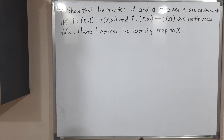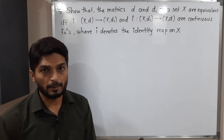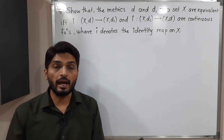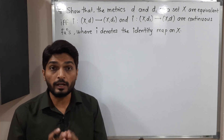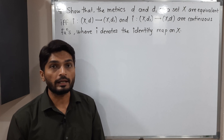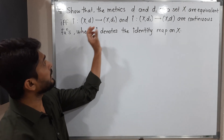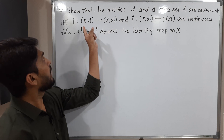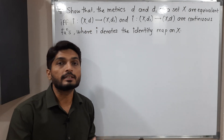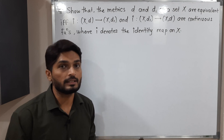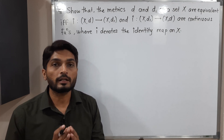In this video we are going to discuss this example. We have two metrics d and d1, both defined on the same set X. We have to prove that d and d1 are equivalent metrics if and only if the identity map i from (X,d) to (X,d1) and the identity map i from (X,d1) to (X,d) are both continuous functions.